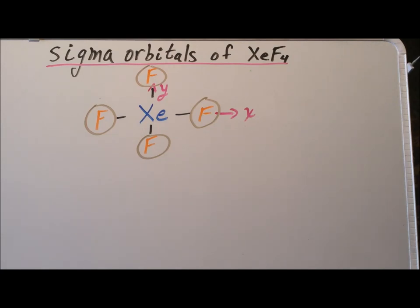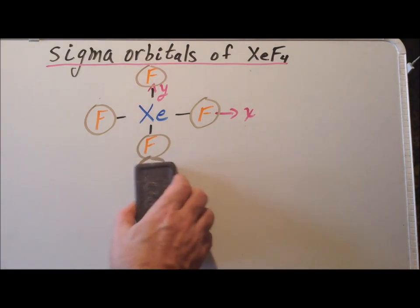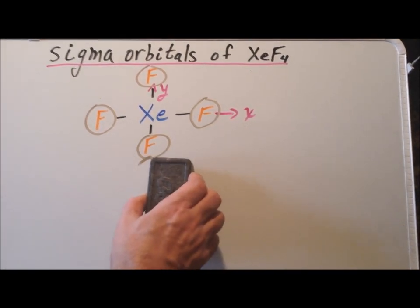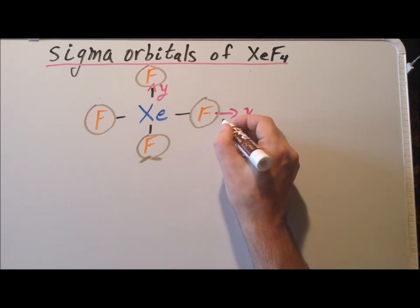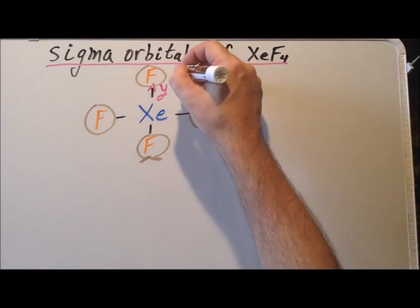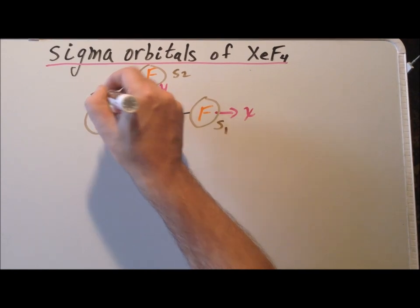We could just as well have written these as P orbitals. In fact, we will know from energy considerations, but not symmetry considerations, that the relevant atomic orbitals involved on fluorine are going to be P orbitals and not S orbitals. Nonetheless, it just makes the representation of the molecular orbitals easier if we, for simplicity, represent them as if they were S orbitals. So next, we label these atomic orbitals on fluorine S1, S2, S3, and S4, where S is for sigma.